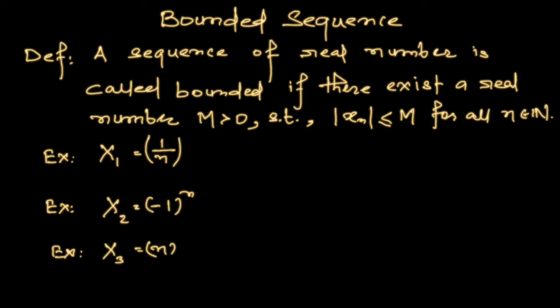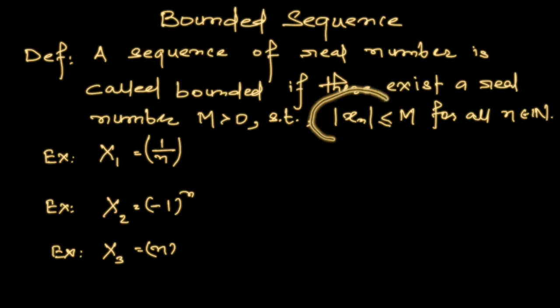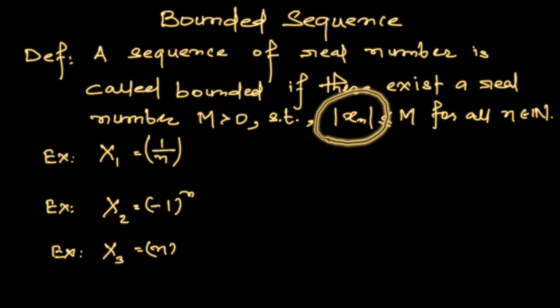What is a bounded sequence? A sequence of real numbers is called bounded if there exists a positive real number M such that the absolute value of any term is less than M for all n belonging to the natural numbers. The definition is intuitive — bounded means limited, somehow restricted, so the magnitude of each term is restricted by M.